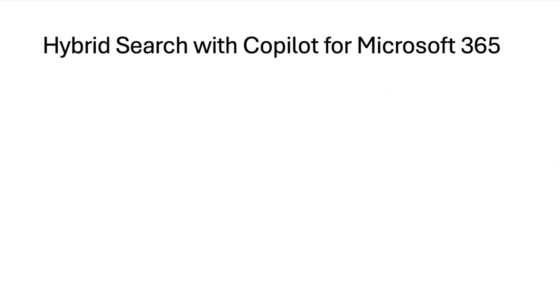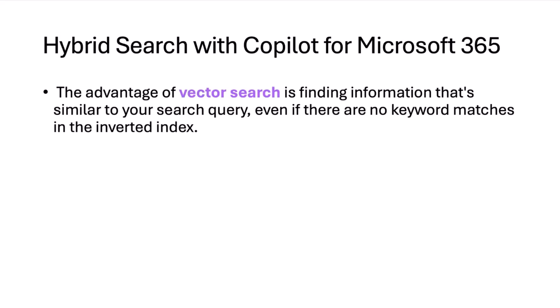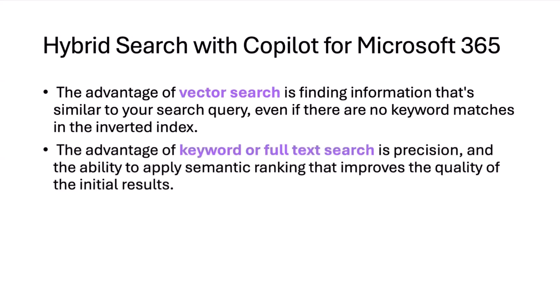The advantage of Vector Search is finding information that's similar to your search query, even if you don't use the exact keyword. For example, if you type 'complaint' or 'customer feedback', with Vector Search our system understands that it is a feedback or a complaint. We also get the advantage of keyword text search, where precision is the key benefit — every time we type the same keyword, we get the exact same result. Semantic ranking improves the quality of results further.